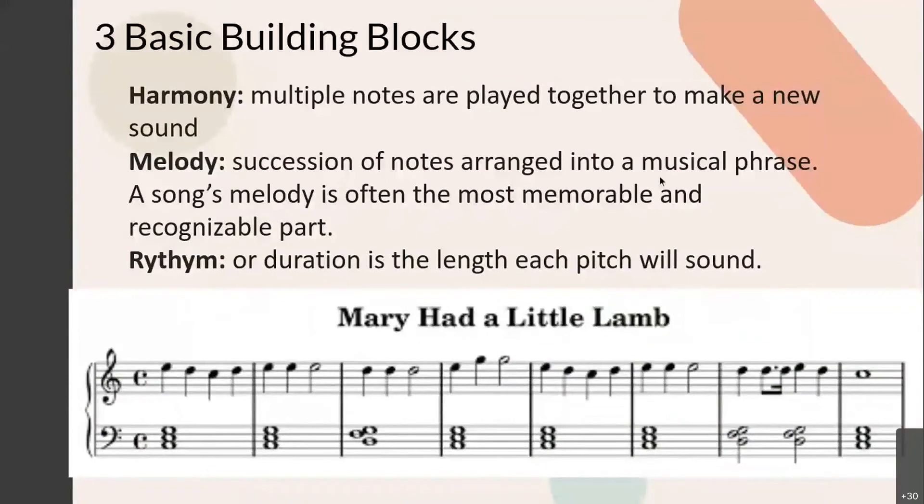Now we have your three basic building blocks of music. So you have a harmony, a melody, and a rhythm. So harmony is multiple notes that are played together to make a new sound. The melody is the notes arranged into a musical phrase. So that's the part of the song that you're going to remember. So for example, we have Mary Had a Little Lamb.